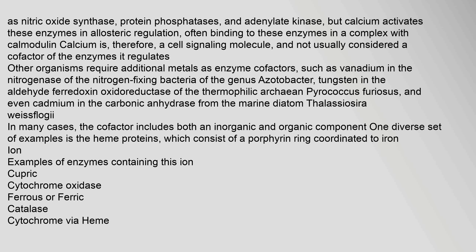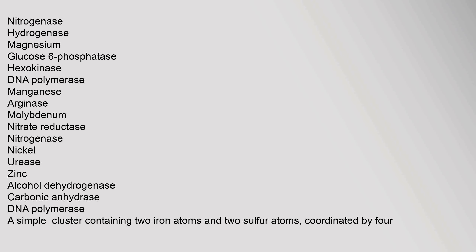Other organisms require additional metals as enzyme cofactors, such as vanadium in the nitrogenase of nitrogen-fixing bacteria of the genus Azotobacter, tungsten in the aldehyde ferredoxin oxidoreductase of the thermophilic archaean Pyrococcus furiosus, and cadmium in the carbonic anhydrase from the marine diatom Thalassiosira weissflogii. In many cases, the cofactor includes both an inorganic and organic component. One diverse set of examples is the heme proteins, which consist of a porphyrin ring coordinated to an iron ion.